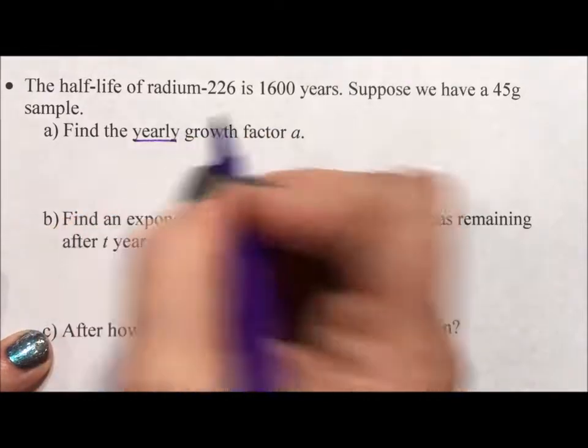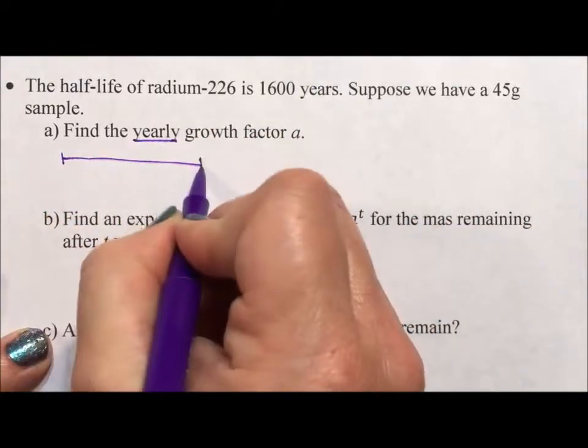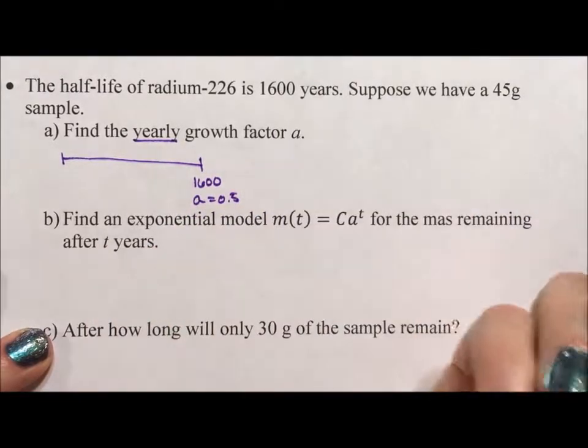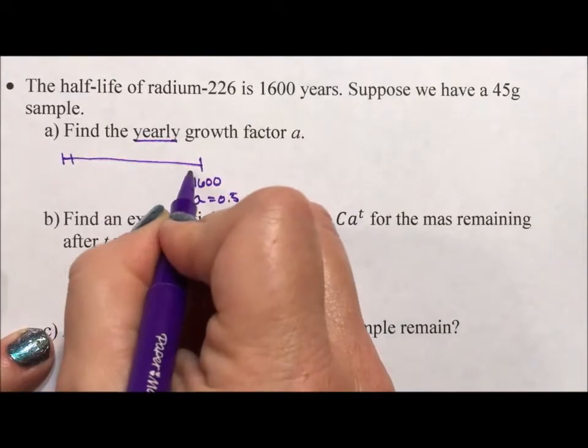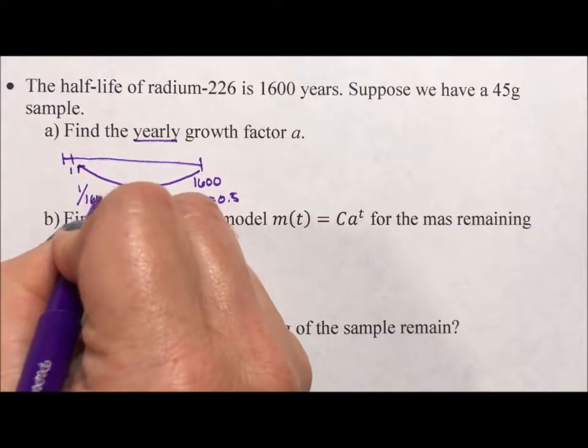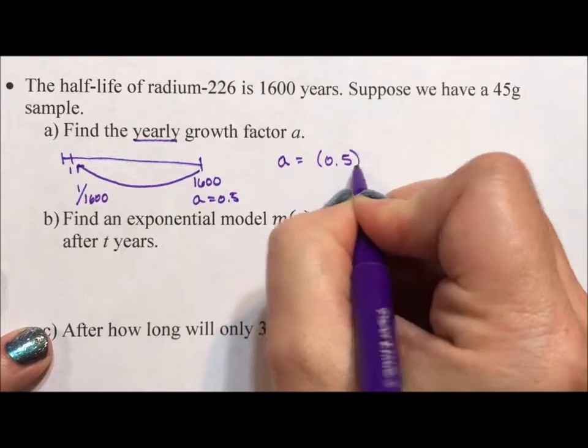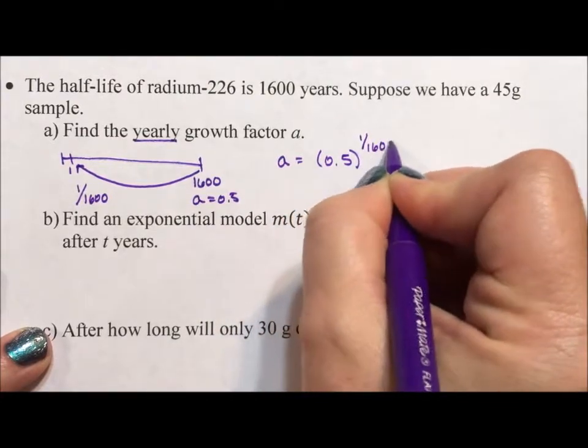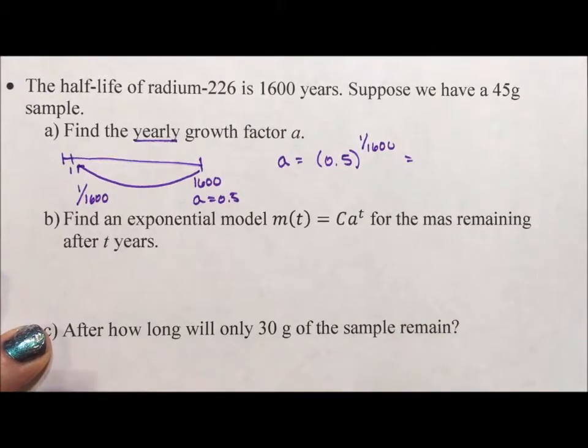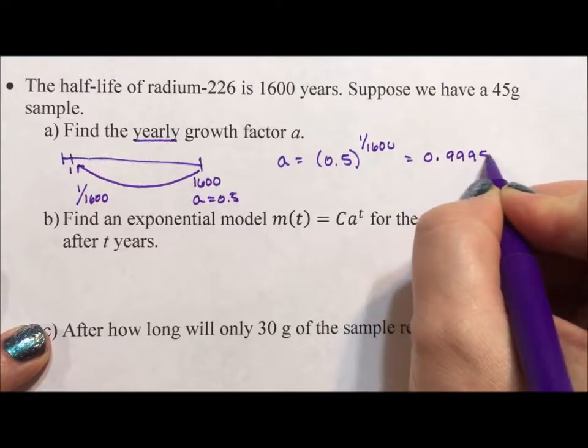Find the yearly growth factor. We know that in 1,600 years, A would be 0.5 because that's what half-life is. We want to go all the way down to one year, so we want 1,600th of that time. So we want A to be 0.5 to the 1 over 1,600 because we're going to a smaller time frame. And 0.5 to the 1 over 1,600 is 0.99956.